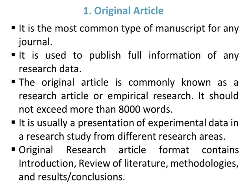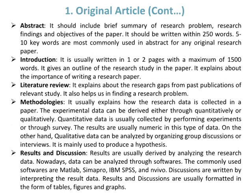The original research article format contains: introduction, review of literature, methodologies, and results or conclusions. The abstract should include a brief summary of the research problem, research findings, and objectives of the paper. It should be written within 250 words. Five to ten keywords are most commonly used in an abstract for any original research paper.